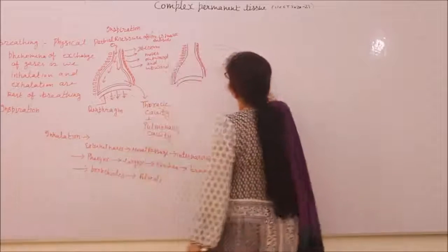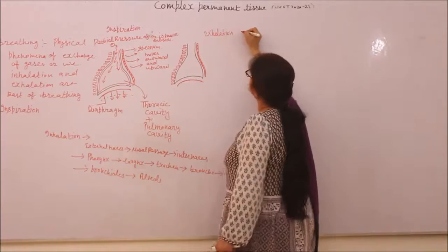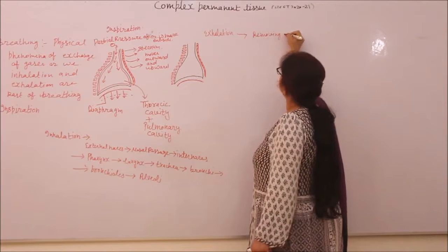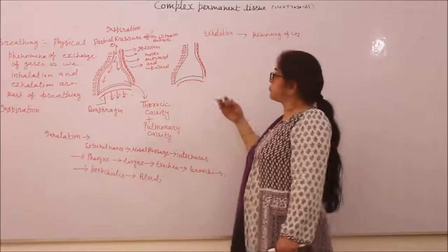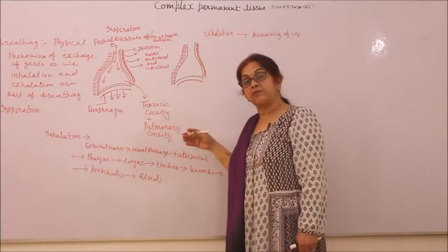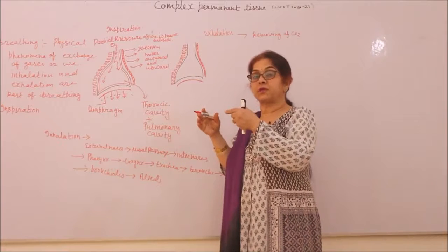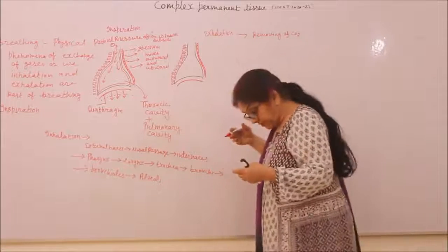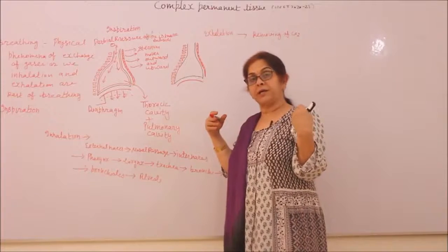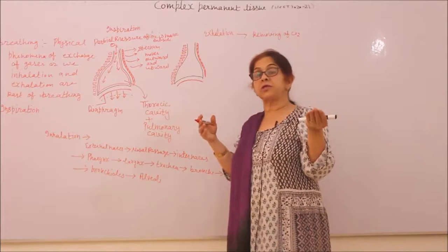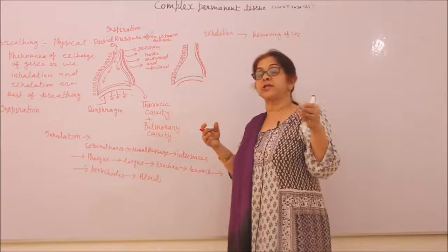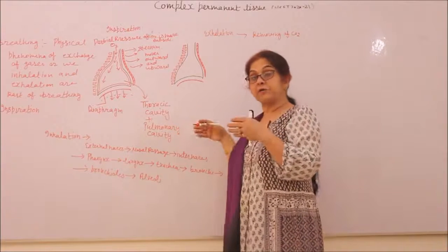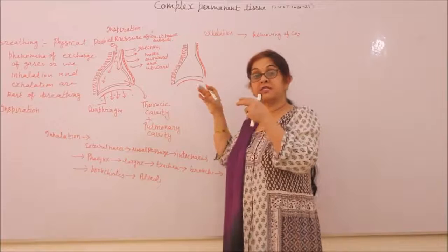Now we come to exhalation. Exhalation means removal of CO2 from the body cavity. Oxygen enters the alveoli, which are lined with thin-walled capillaries — the actual site of gaseous exchange. Oxygen moves from alveoli to blood capillaries, then to tissues, where it is consumed during metabolic processes. CO2 is formed in the tissues, moves back into blood capillaries, then into the alveoli. The partial pressure of CO2 is now higher inside.